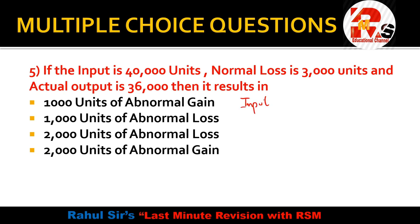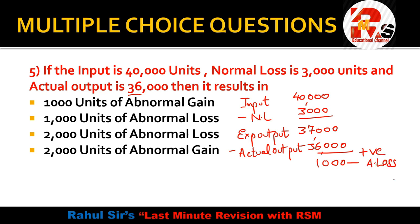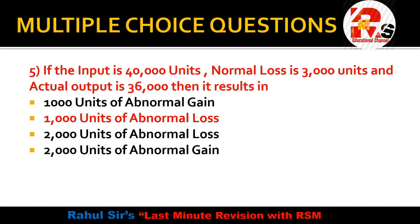Input given is 40,000 units, normal loss is 3,000 units. So expected output = 40,000 − 3,000 = 37,000 units. Actual output is 36,000 units. 37,000 − 36,000 = 1,000 — a positive answer, which means abnormal loss. If the answer is positive, it is abnormal loss; if negative, it is abnormal gain. So the right answer is 1,000 units of abnormal loss.